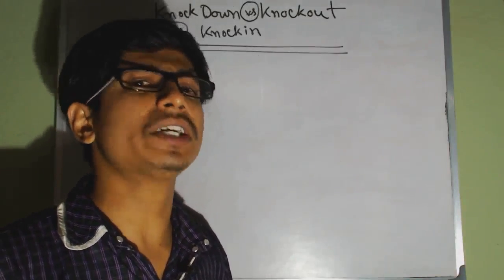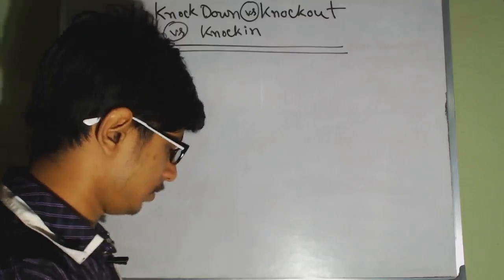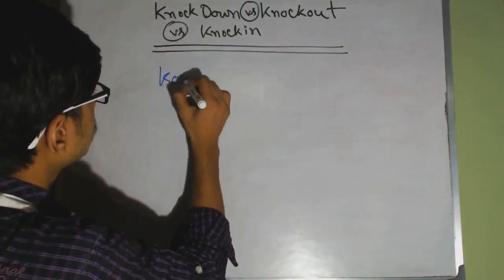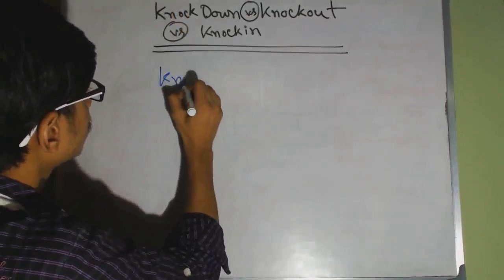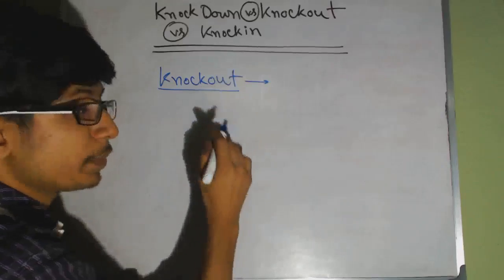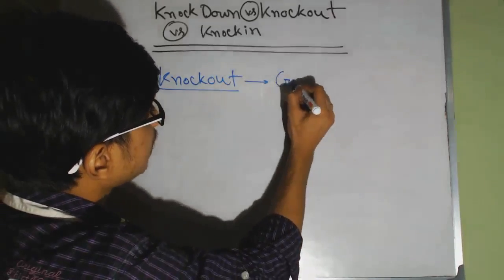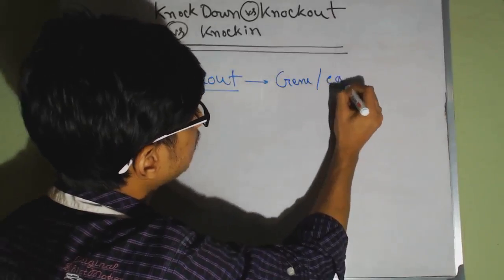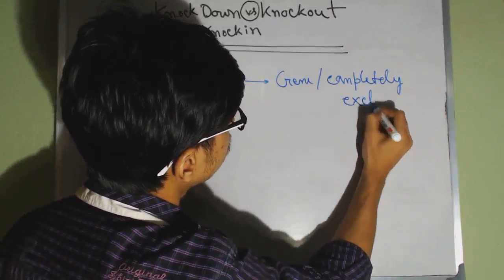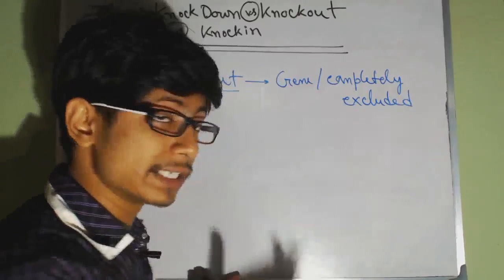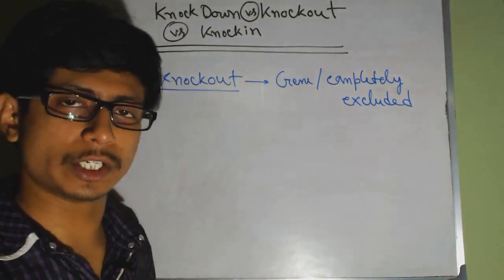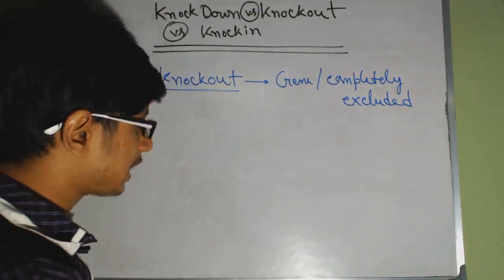Now, what are the differences? The term 'knockout' — 'out' means excluded. Knockout means the gene in question is completely excluded from the organism's body. That gene is never present; it is not present in that organism's body at all.